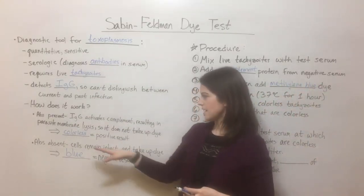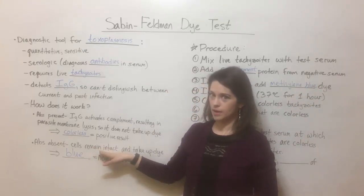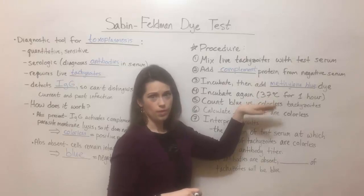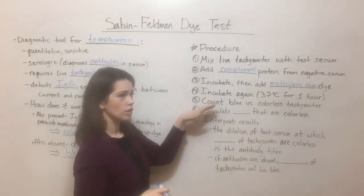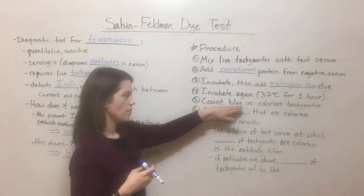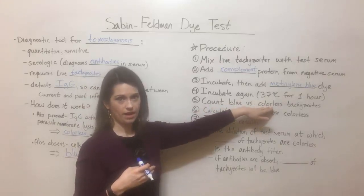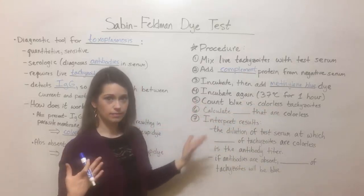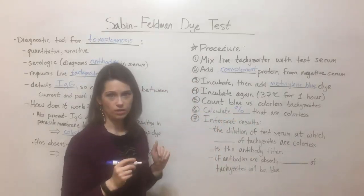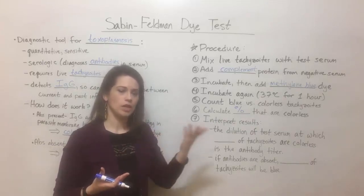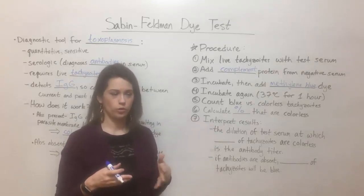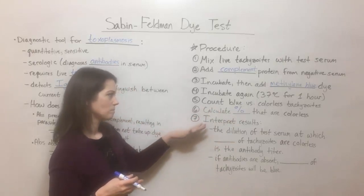Then you incubate and add methylene blue dye. If the parasite cells remain intact because there are no antibodies in the test serum, you get blue cells from the methylene blue dye. After adding the dye, you incubate again for about an hour at human body temperature. Then you look under a microscope, find the tachyzoites in the mixture, and count how many are blue and how many are thin and colorless. Calculate the percentage that are colorless by dividing the number of colorless cells by the total count.